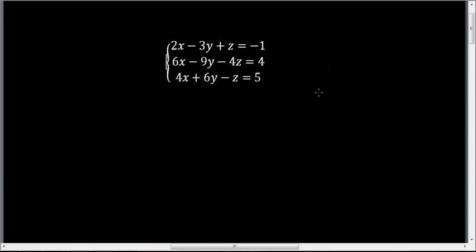So what I'm going to do in this particular problem is use only substitution to solve it. We need a battle plan here. The very first thing we want to do is label these equations, and I'm going to label them as one, two, and three — I'm going to label that one in green.